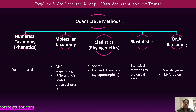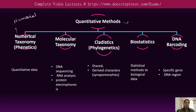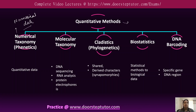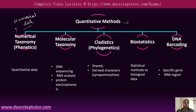The second one is the quantitative method. The first approach within this is numerical taxonomy. As the name suggests, it includes numerical data for the quantification of morphological features. It is a computational approach and it uses various software for showing the relatedness between different organisms. It is based on quantitative data.